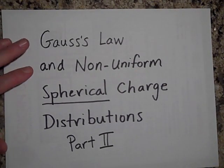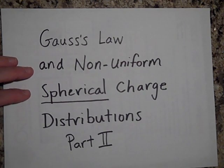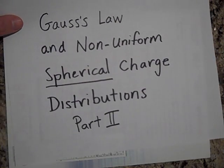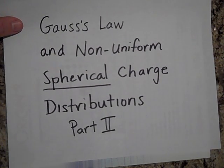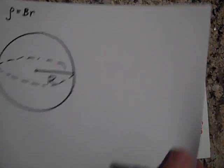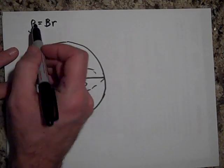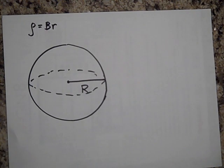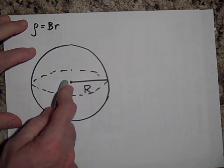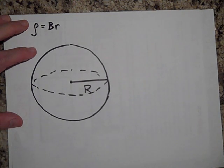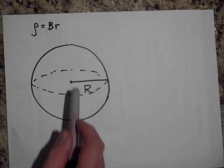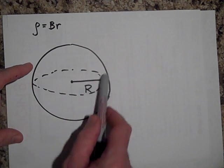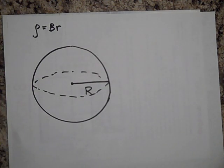I want to talk about Gauss's law and non-uniform spherical charge distributions, part two. We'll use what we learned in the last video to find electric fields. Here's a sphere where the charge is not uniform — as you go outward, the charge density gets greater and greater until you reach radius R, where it returns to zero.